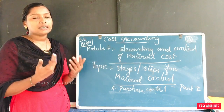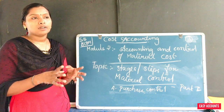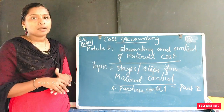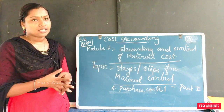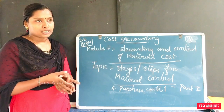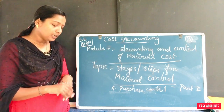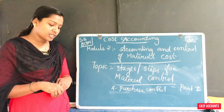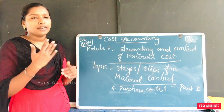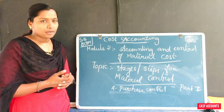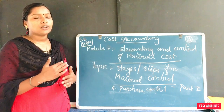In large-scale or large manufacturing industries, separate purchasing departments are maintained to control all materials. All types of materials — any materials — are handled by this department. The head of this department is usually known as the Purchase Manager or the Chief Buyer.